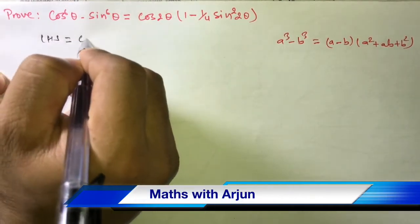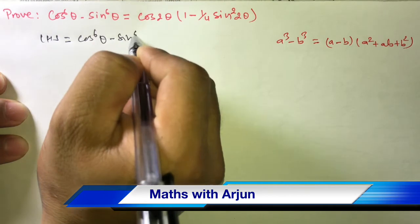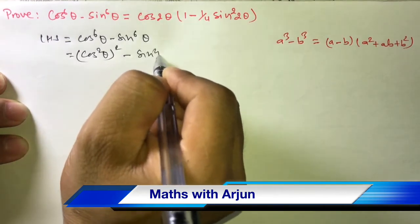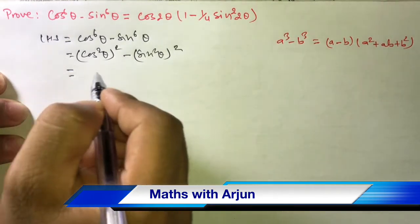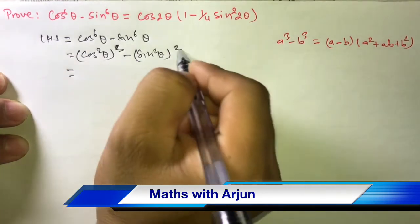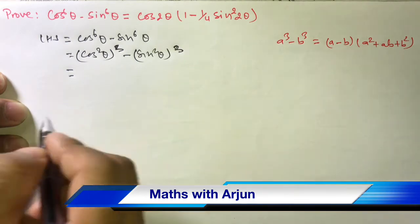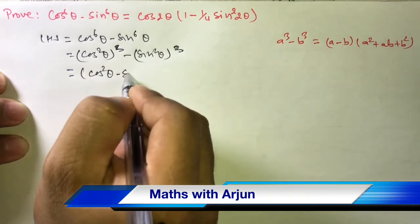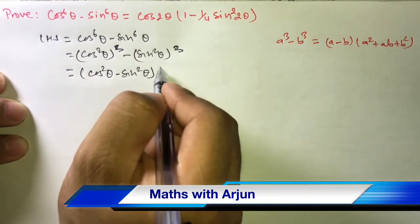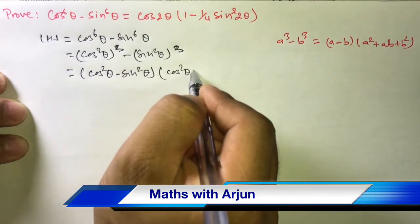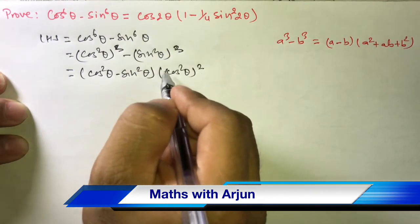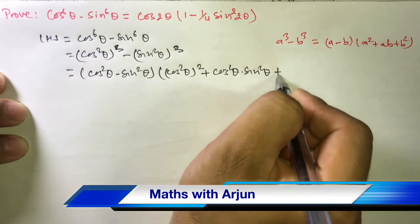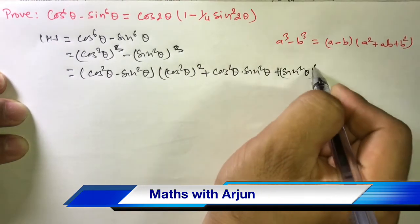LHS is equals to cos⁶θ minus sin⁶θ. We can write this as (cos²θ)³ minus (sin²θ)³. Now this is the formula of a³ minus b³, which gives a minus b times a² plus ab plus b², where a equals cos²θ and b equals sin²θ. So we get cos²θ minus sin²θ, times cos⁴θ plus cos²θ sin²θ plus sin⁴θ.